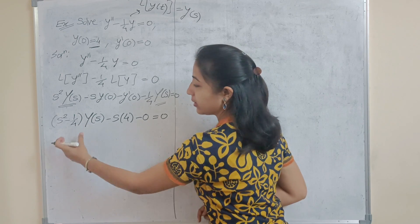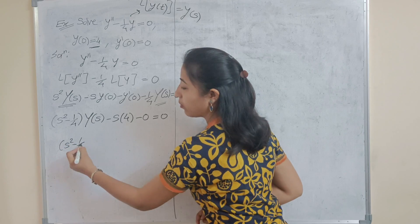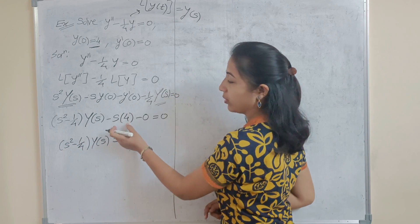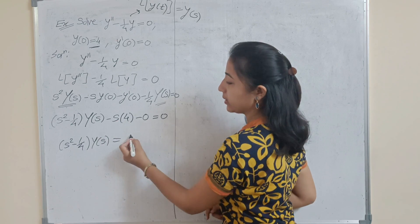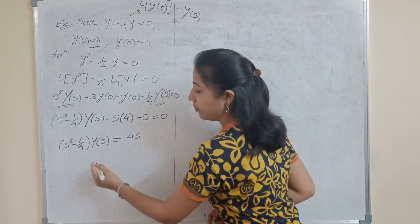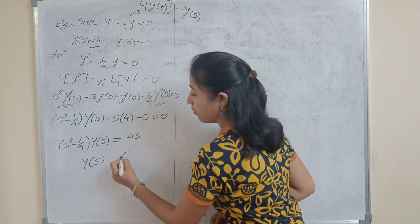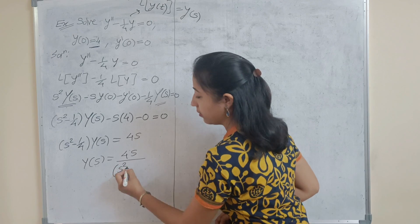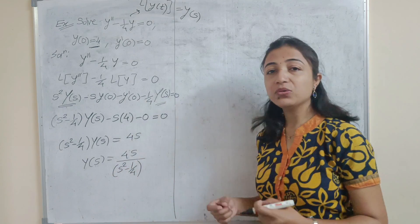Collecting the terms with Y(s): the coefficient of Y(s) from the first and last terms gives (s² − 1/4)·Y(s) minus 4s = 0. Shifting the 4s to the right-hand side: (s² − 1/4)·Y(s) = 4s. Therefore, Y(s) = 4s / (s² − 1/4).